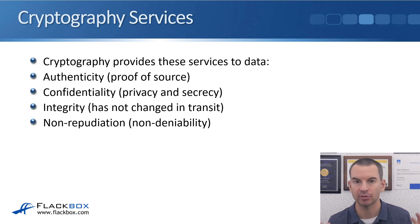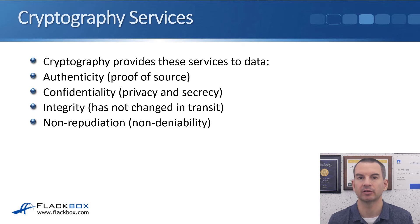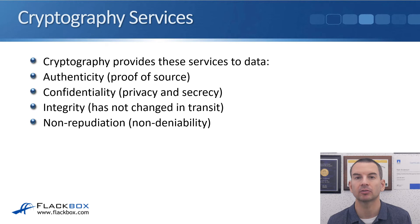Cryptography provides these services to the data. First up, authenticity, which is proof of source — proving that the data really did come from who you think it came from. Then confidentiality, which is privacy and secrecy, so you can send data over an untrusted network and even if somebody sniffs that traffic, they're not able to read it. And integrity, meaning it has not been changed in transit. And finally, non-repudiation, which is quite similar to authenticity — it proves you are talking to who you think you're talking to, but also means they cannot deny it was them later.